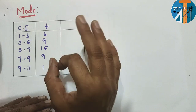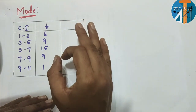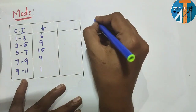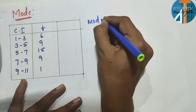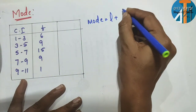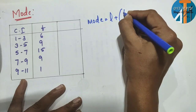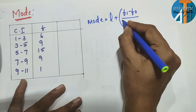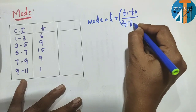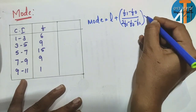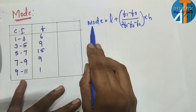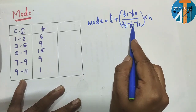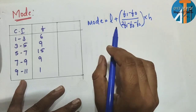Now for mode. Compared to mean and median, mode is a bit trickier — you need to memorize this formula. Mode = L + (F1 − F0) / (2F1 − F0 − F2) × H.